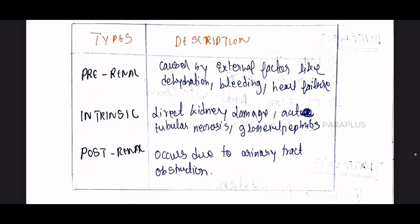Pre-Renal means the problem is not directly in the kidney — it is caused by external factors such as reduced water content, bleeding, or heart failure affecting blood supply to the kidney.